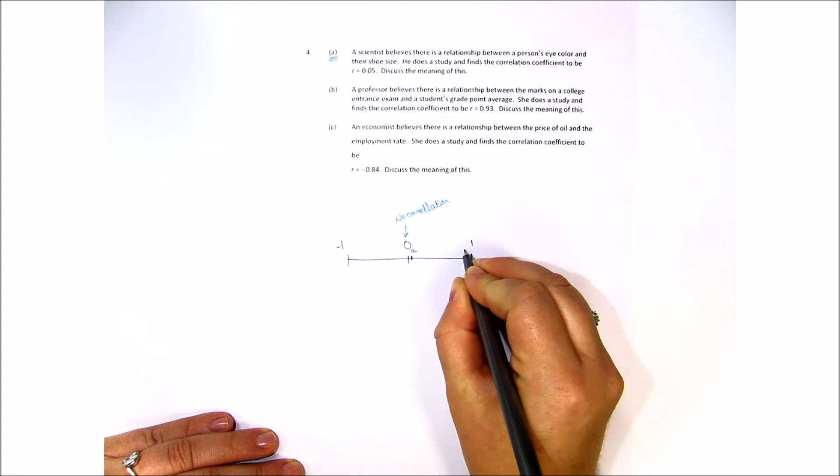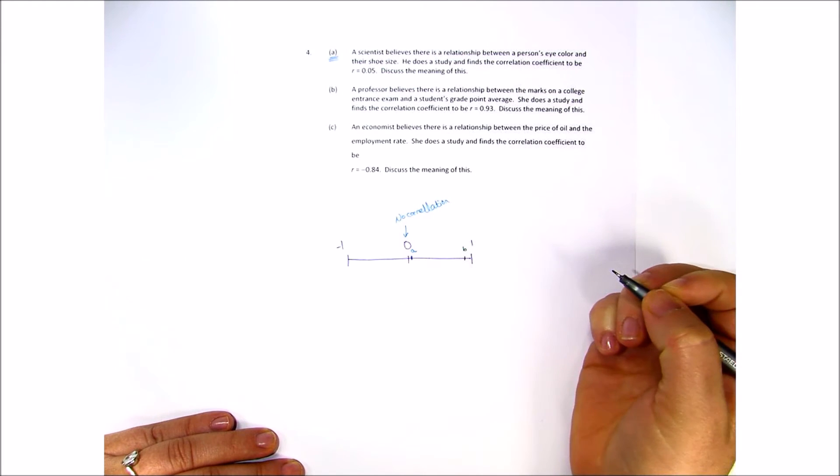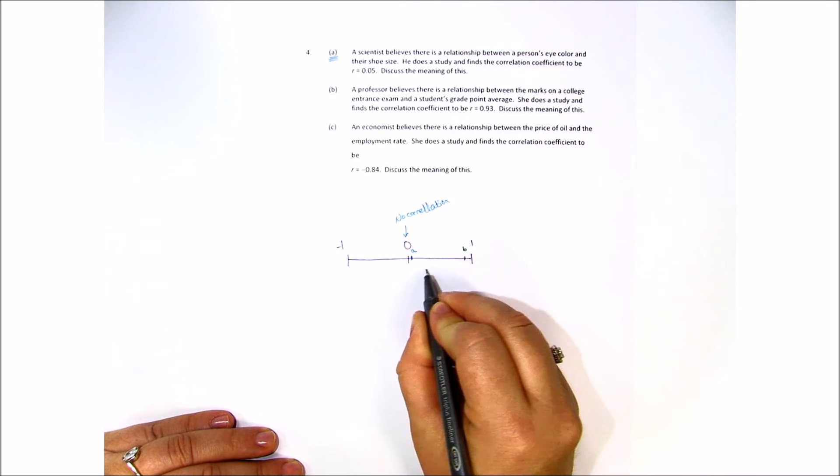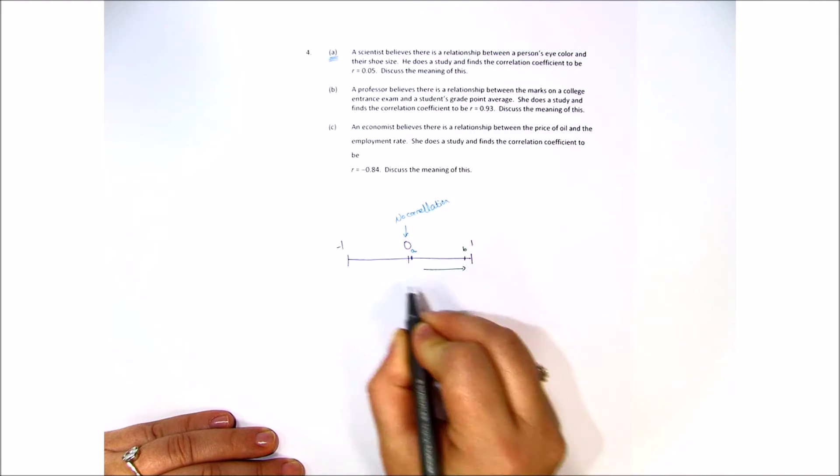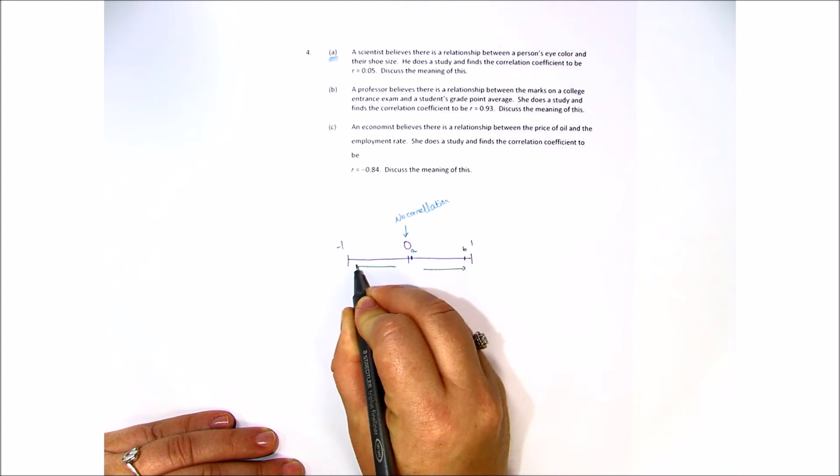Okay, so let's look at that. That would be right here, right about B. Discuss the meaning of this. Now as we know, as it gets closer to positive 1 or negative 1,